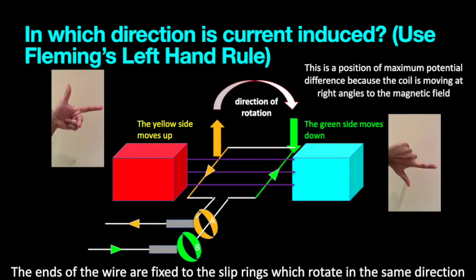The key thing to remember is that current first flows through slip ring B and then to slip ring A. So, from B and to A. It's really important to remember when distinguishing between an alternator and a dynamo. So, first from B and then to A. Make sure you remember that.